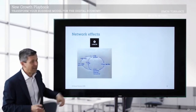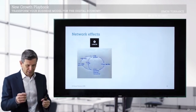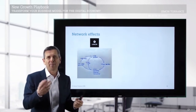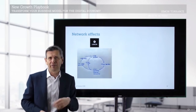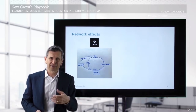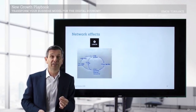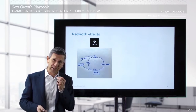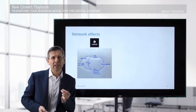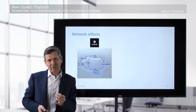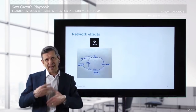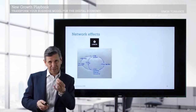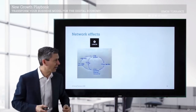This diagram here was allegedly drawn on a napkin by one of the venture capitalists who originally invested in Uber. He was trying to articulate the business model behind the company and how it generates these network effects.